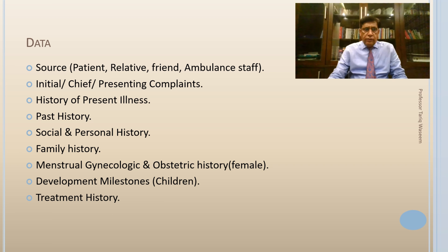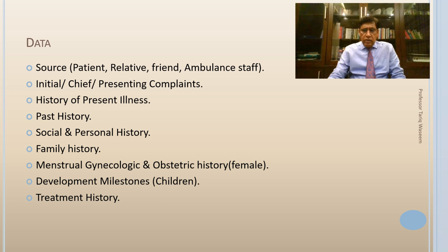Note whether the patient has any previous illness that might have a bearing on the current disease. Social and personal history is important. We also want to know about any family history of known or inheritable disease. In women, it's always good to know gynecological and menstrual history. In children, note developmental milestones. And of course, note what kind of treatment the patient has received for the current problem or any ongoing medication.